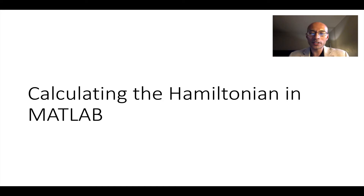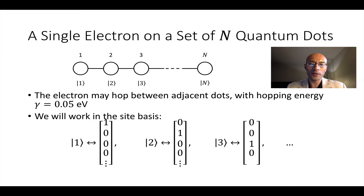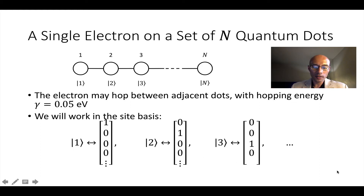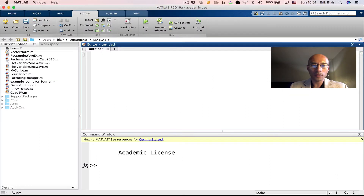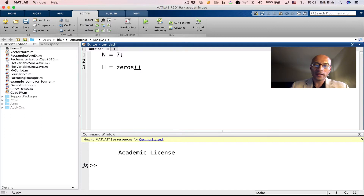Now let's demonstrate a calculation of the Hamiltonian in MATLAB with a different example. Instead of two quantum dots, we're going to have n quantum dots with no external charges — just one electron that can hop between adjacent dots with hopping energy gamma, working in the site basis. Here we are in MATLAB. I'm going to begin by defining the dimension of the system: we'll set n equal to 7 for now, a nice manageable number. We assume one electron with nothing to interact with and no external charges, so the potential energy of that electron is zero — our zero of energy. We say H equals zeros of dimension n.